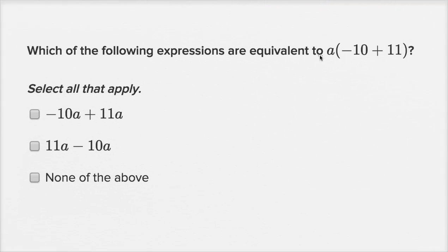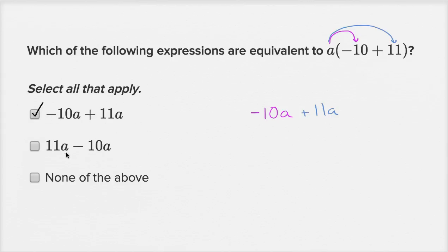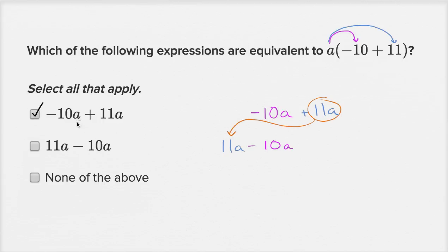Which of the following expressions are equivalent to a times the quantity negative ten plus eleven? When you see something like this, you'd want to distribute that a. So a times negative ten is negative ten times a, or negative 10a, and then plus a times eleven, which is 11a. Looking at the choices: negative 10a plus 11a matches directly. The other choice just swaps the order — writing 11a first and then minus 10a. That's equivalent by the commutative property, so I'd select that one as well.